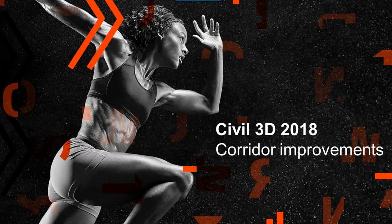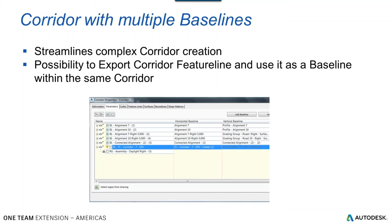On some of the corridor improvements — this is where we get into multiple baselines. For quite some time we've had the ability to extract feature lines from a corridor. One of the big drawbacks was when we extracted a feature line from, say, the edge of pavement on the right-hand side — it was great, we could grade off of that, but the problem was we could not target it. This is another advantage of 18: I can actually target that with my assembly, which allows me to move my alignment up and down vertically, whatever design I'm trying to achieve. That's huge.